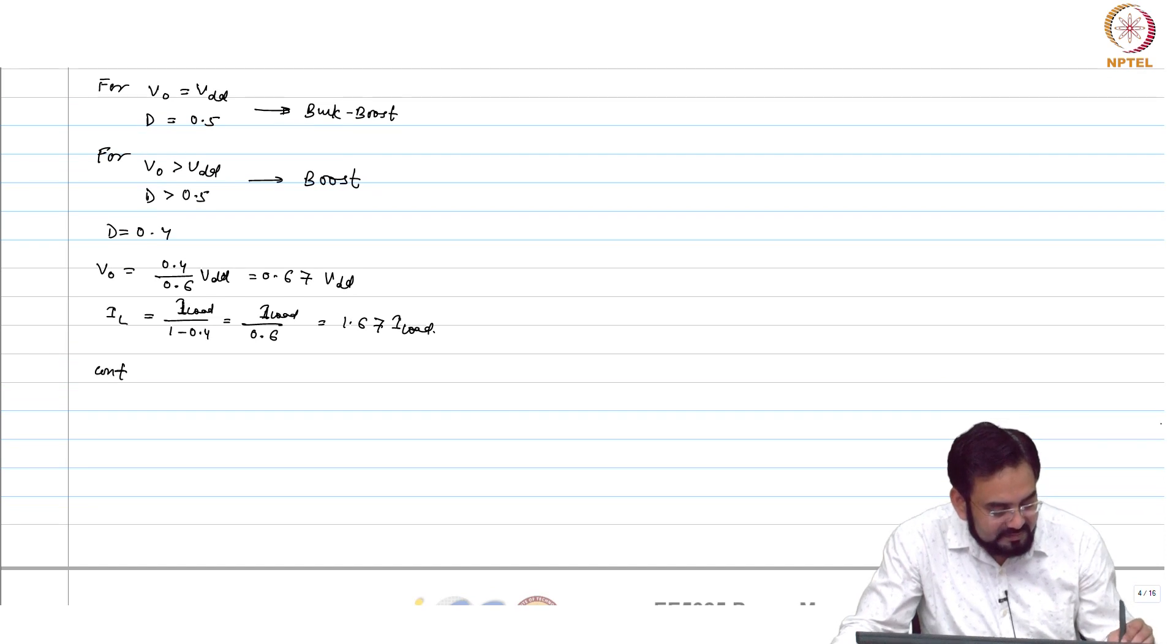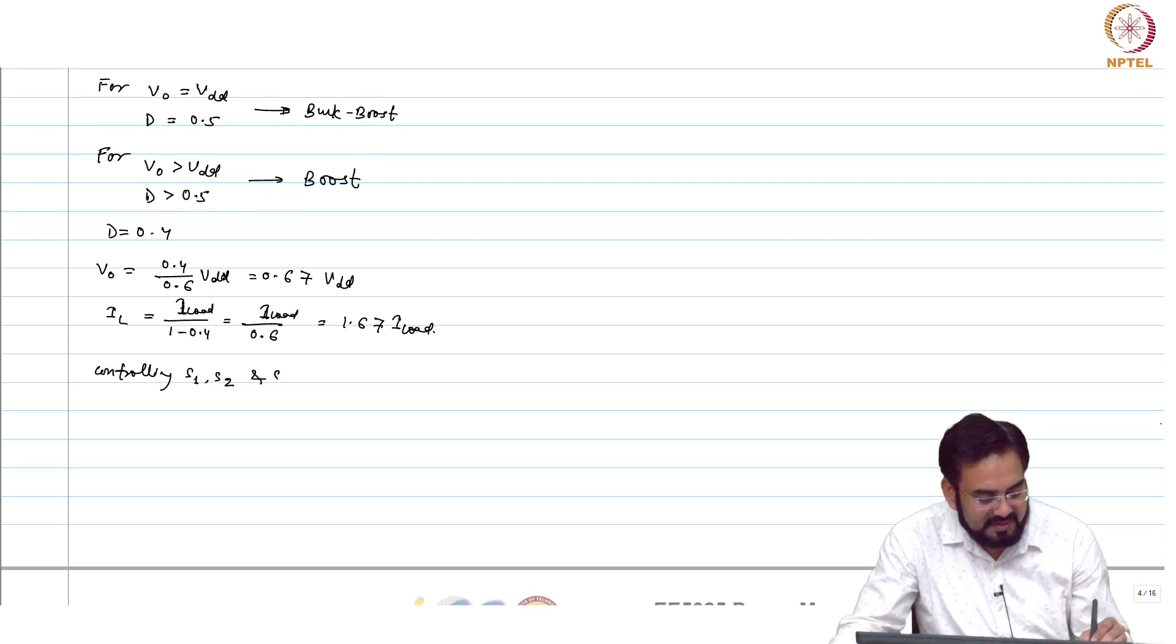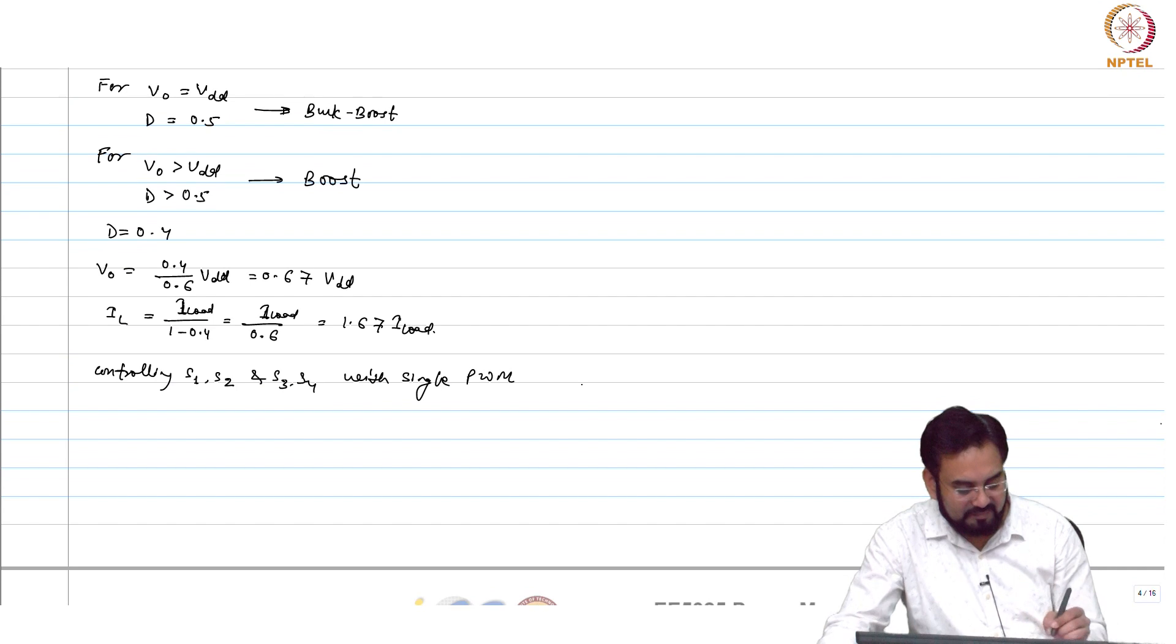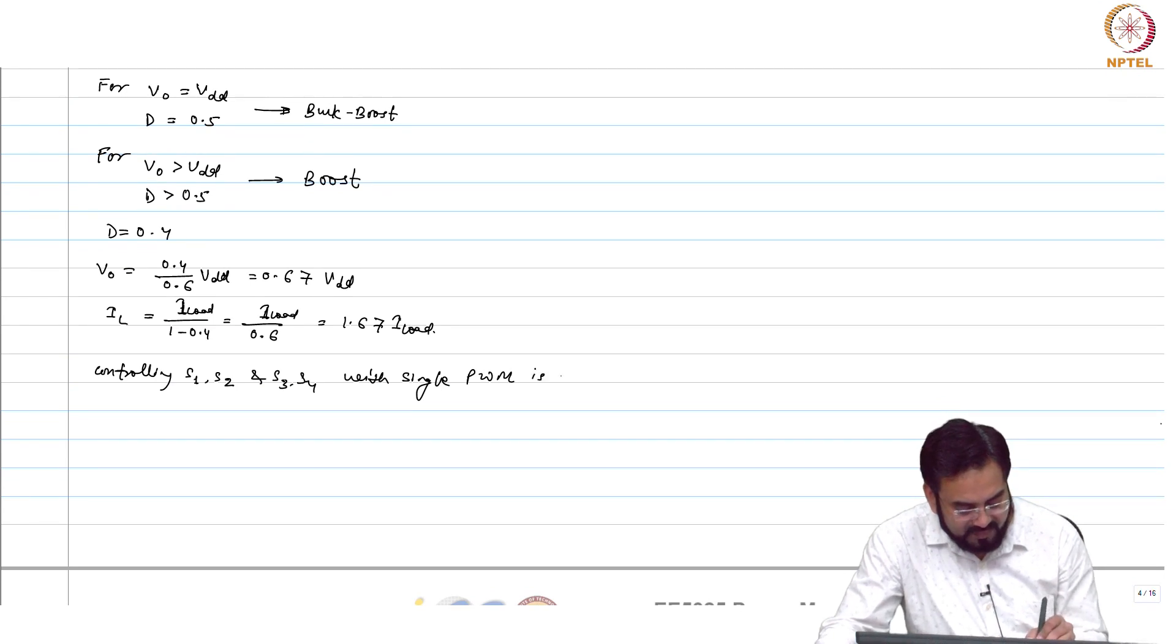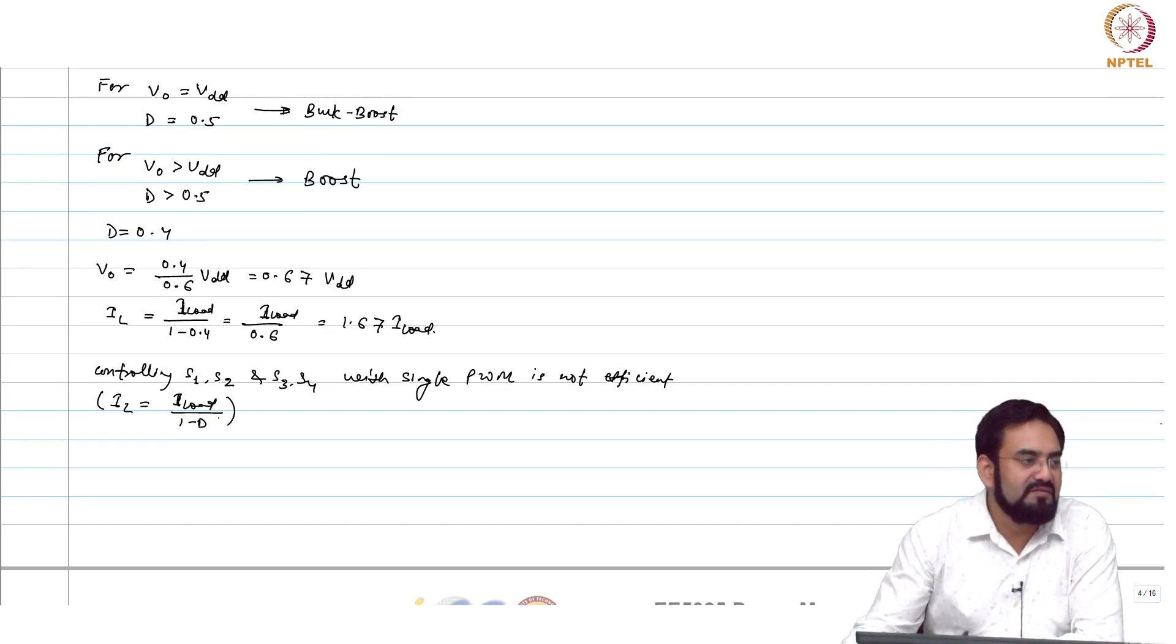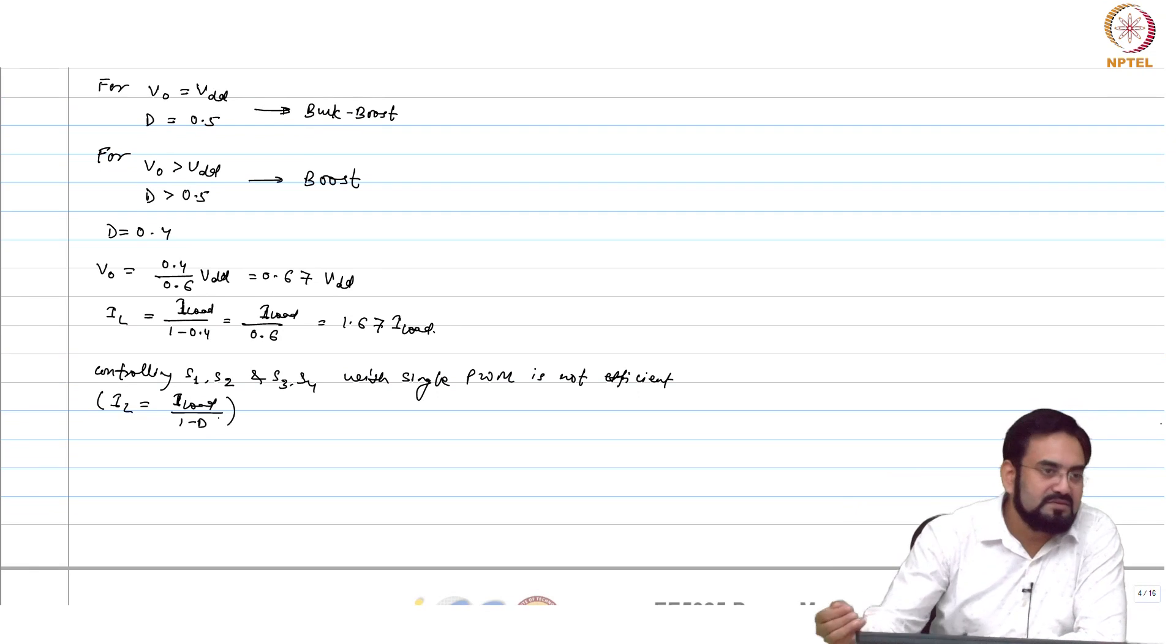So, controlling S1, S2, S3, and S4 with single PWM is not efficient. Why? Because IL equals I load over 1 minus t, so current will always be higher than load no matter whether you operate in buck or boost.